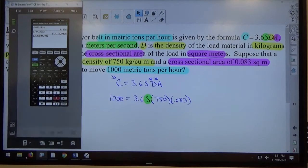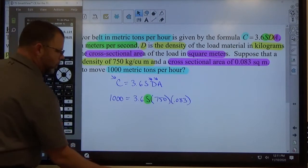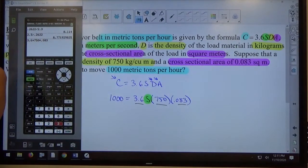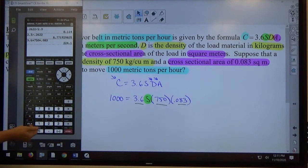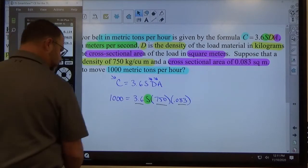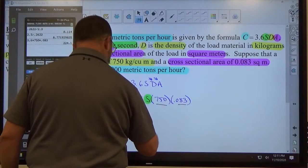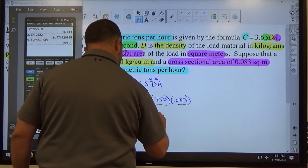And I type in 3.6 times 750 times 0.083. So again, I just took the 3 numbers that aren't the letter, this, this, and this. They're all being multiplied. So I simply multiply and hit enter, and that's what it is. So 1,000 equals 224.1 S.